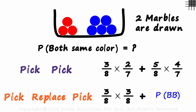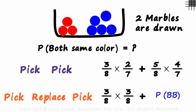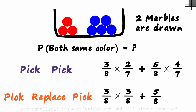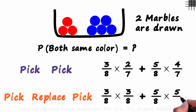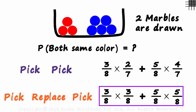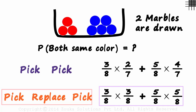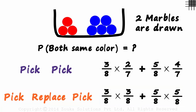What is the probability of both marbles being blue? The probability of picking a blue marble first is 5 over 8. After putting it back in the box, the probability of picking a blue marble again is 5 over 8. This gives the probability for the second case, where we put the marble back before picking the second one.